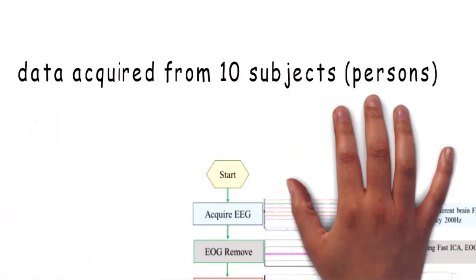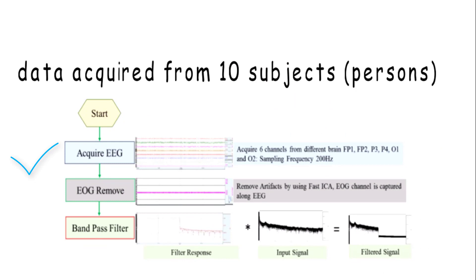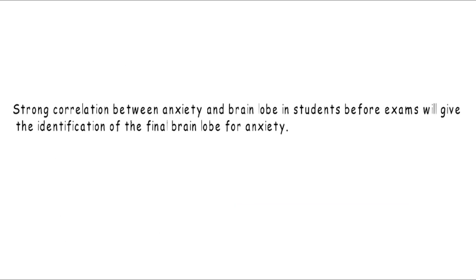Firstly, we acquired the number of samples from 10 different subjects. Secondly, we remove the outliers to make the signal more refined. Then the signal is filtered from bandpass filter. The next process is to determine the correlation of the filtered signal with the channels. This would help in identifying which brain lobe has strong correlation with exam-related anxiety in students.